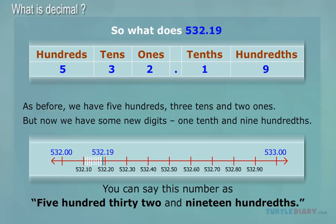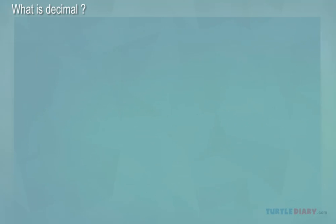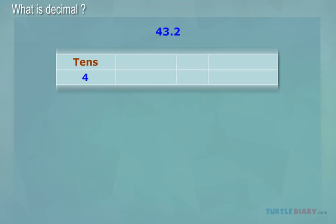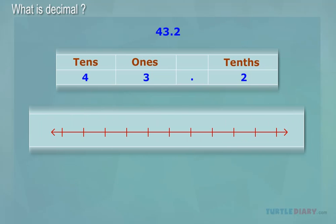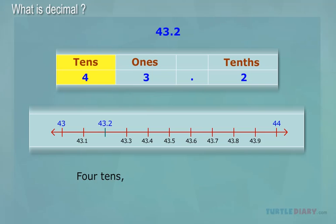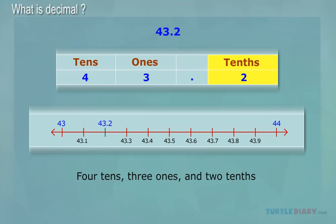You can say this number as 532 and 19 hundredths. Let's try another one: 43.2. Four tens, three ones, and two tenths.